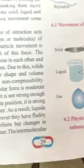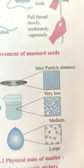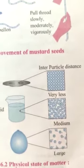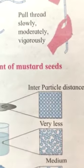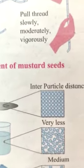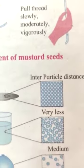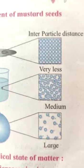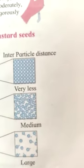In solid, intermolecular force — the force between two molecules — is very strong. So they are stuck to each other and there is no gap in solid. In liquid, it is a little weak, so there is a little gap and they can move. And in gas, it is very weak, so particles can move randomly anyhow.